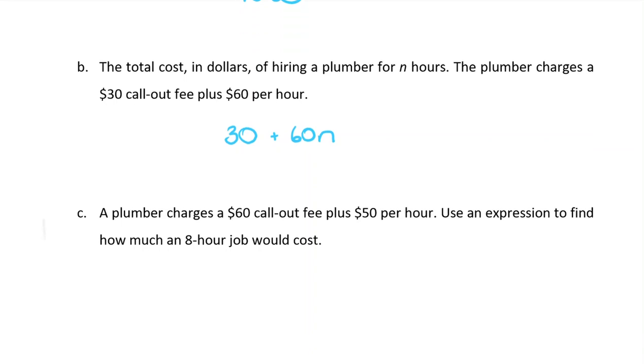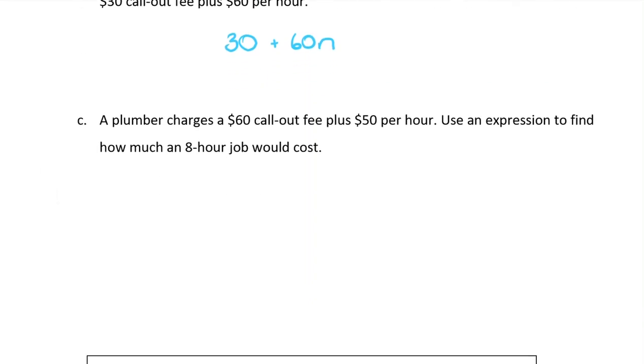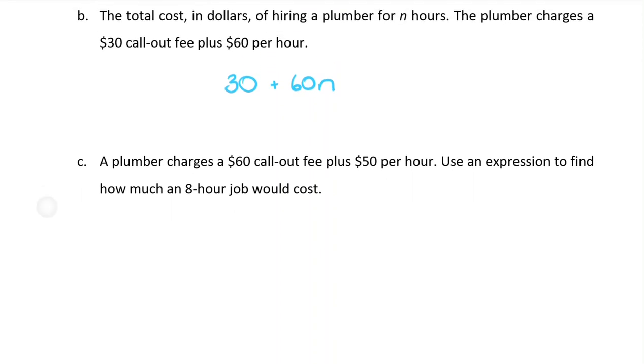Question C: A plumber charges a $60 call-out fee plus $50 per hour. Use an expression to find how much an 8-hour job would cost. So this has got an extra step in it, but the first thing we need to do is write down our expression, which is very similar to what we did in B. For our plumber, he charges $60 for a call-out plus $50 for every hour. And we'll call N the number of hours again.